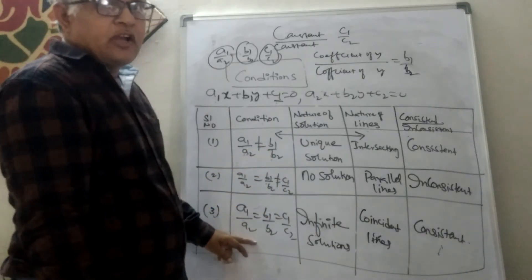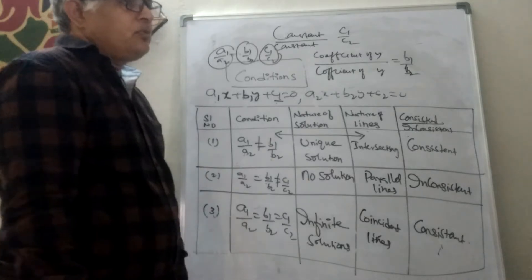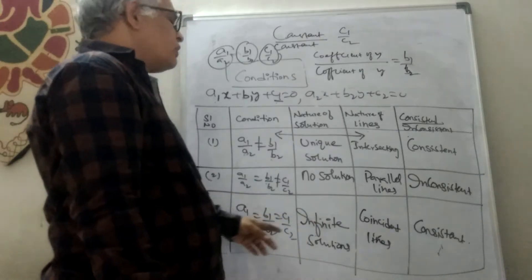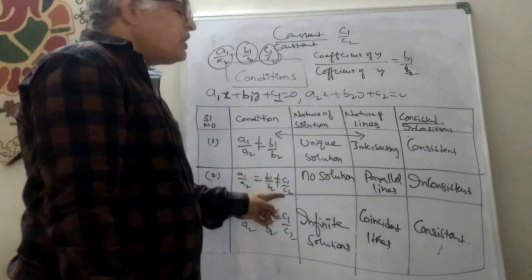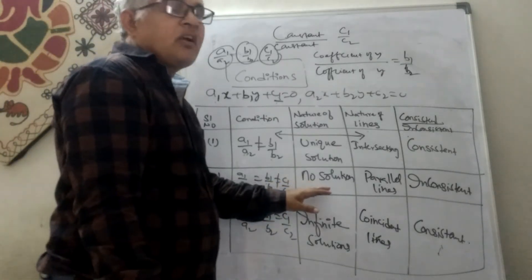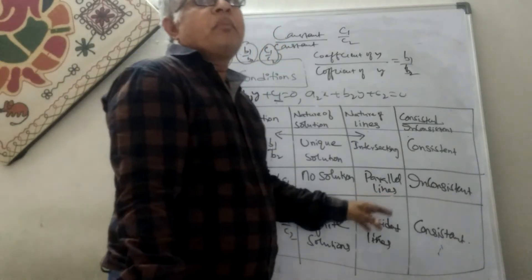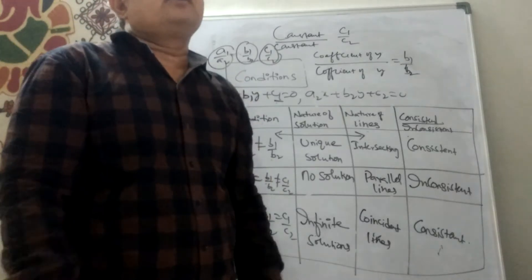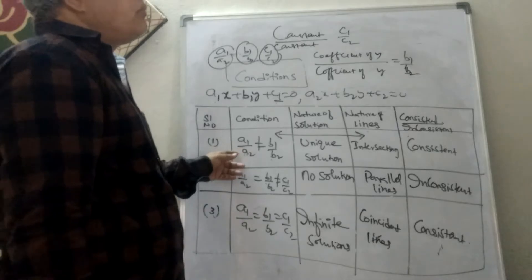Now, if a1/a2 is equal to b1/b2 but not equal to c1/c2 — the first two ratios are the same but the third is different — there will be no solution. The nature of the lines in this case is parallel lines, and the system is inconsistent.